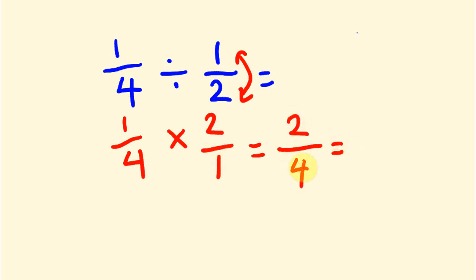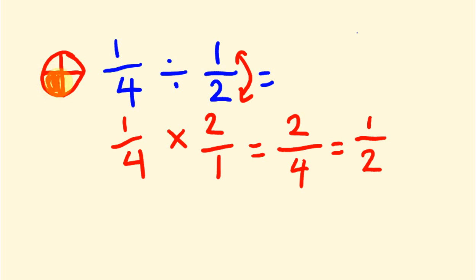There's a number that goes into both two and four, which is two. Two goes into two once, and it goes into four twice. So this simplifies to a half. If you think about it visually: you have a quarter, and you want to see how many times a half goes into it. Well, it doesn't go in fully — only half of it fits. So our answer is a half.